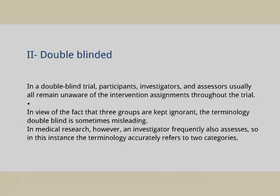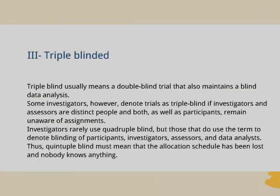Triple blinding means the double blind trial also maintains blind data analysis. Some investigators denote a trial as triple blind if the investigator and assessors are distinct people and both, as well as the participant, remain unaware of the assignment. Quadruple blinding is rarely used, and quintuple blinding would mean that the allocation schedule has been lost and nobody knows anything.